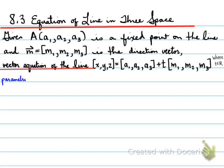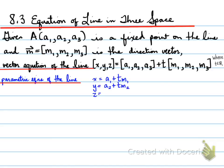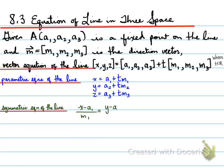A vector equation of a line in 3-space means that you have three variables to worry about. Since this is a line, there's only one parameter we have to worry about, and that will be t. The parametric equation looks very similar to the way we did for a vector equation. We also have the symmetric equation of the line, using a similar method to what we used in 2-space. These three forms are very similar to what you've just learned.